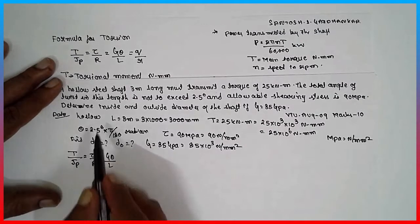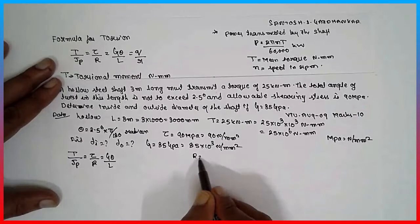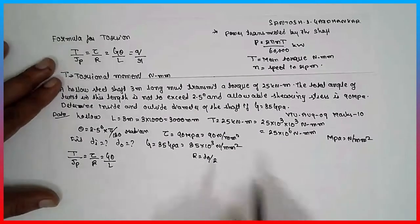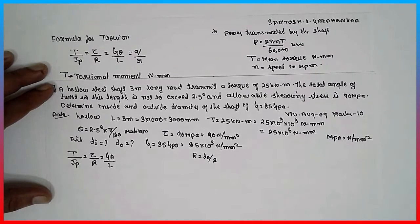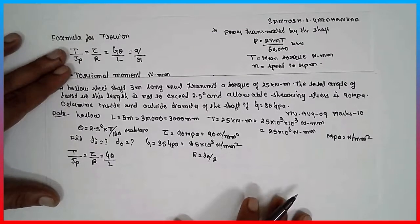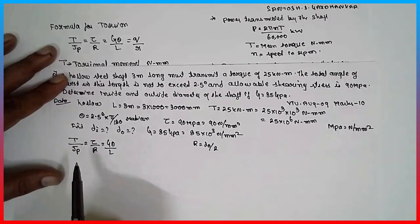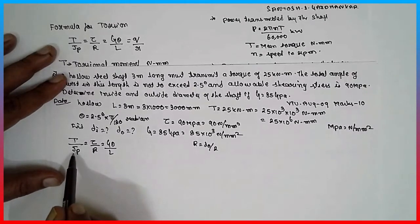Now, as it is a hollow part, here R is nothing but D naught by 2. Now, first, because if you go for the formula for Jp...